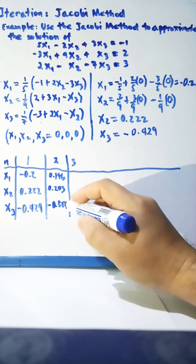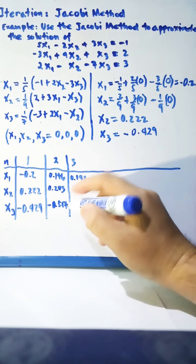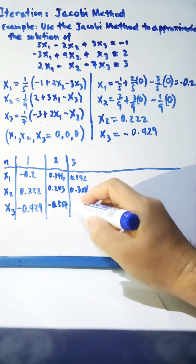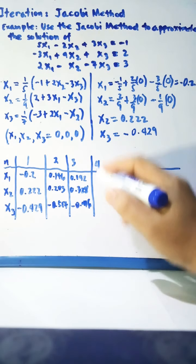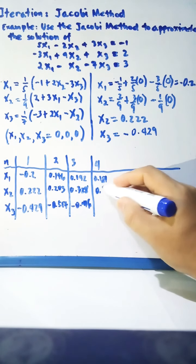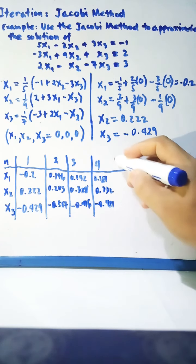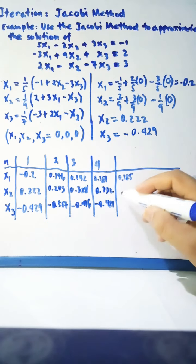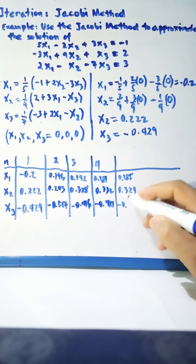For the third iteration, we get x₁ = 0.192, x₂ = 0.328, and x₃ = -0.416. For the fourth iteration, x₁ = 0.181, x₂ = 0.332, and x₃ = -0.421. The fifth iteration gives x₁ = 0.185, x₂ = 0.329, and x₃ = -0.424.